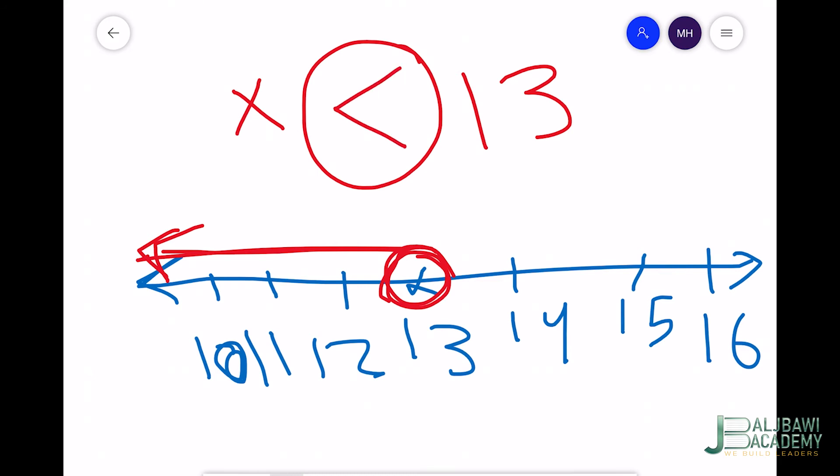Do I need to put 'equal' or no? Because the circle is open, this means 13 is not a solution. So x represents all the values less than 13.